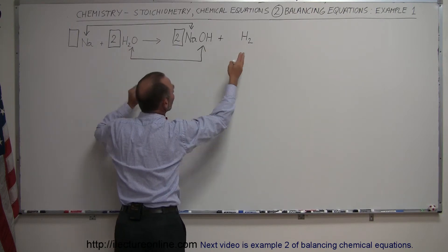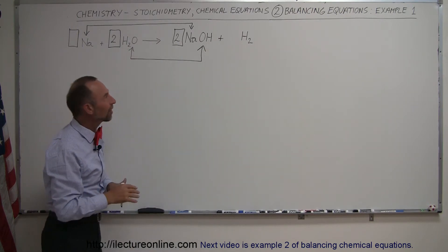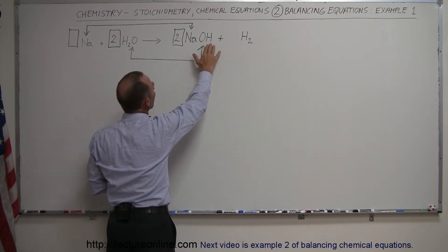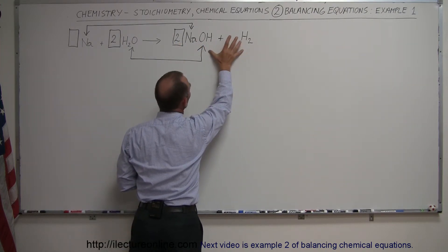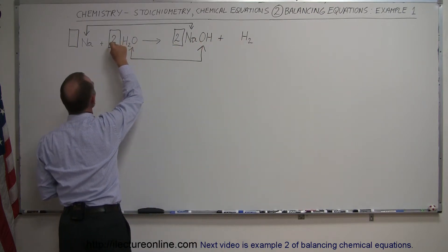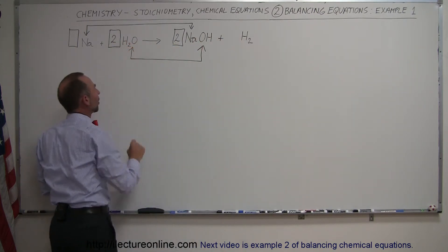So first I balanced the sodium, I was good. Then I balanced the oxygen, it was good simply by realizing that these have to be the same number. But then when I looked at hydrogen, I could only have 2, 4, 6, 8, 10 hydrogens on the left. And here I have 2 plus 1 is 3, that means I could never balance that.